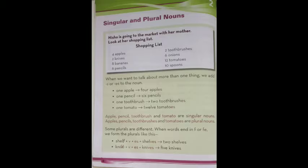So, apple, pencil, toothbrush and tomato are singular nouns. These all are singular nouns. But apples, pencils, toothbrushes and tomatoes are plural nouns. These all are plural nouns.